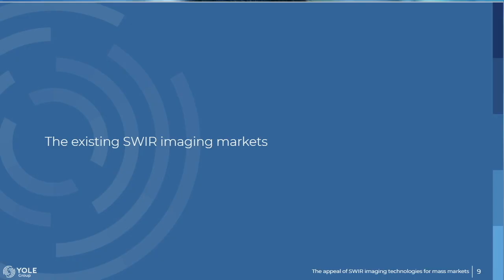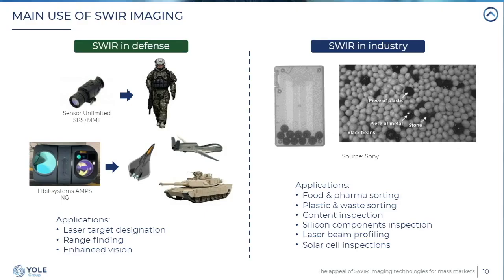SWIR has historically been used in the defense field. For example, it is used in infantryman equipment and integrated into targeting pods mounted on vehicles like drones, planes, and tanks. SWIR is used for long-range imaging, seeing through smoke, fog, and bad weather conditions. It also enables laser target designation. Because not all armies are equipped with SWIR, it gives a stealth advantage — which is why laser target designation is the main application today.